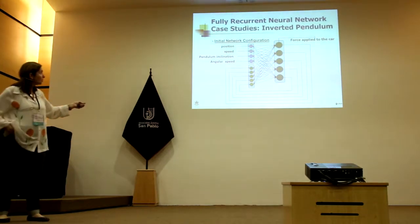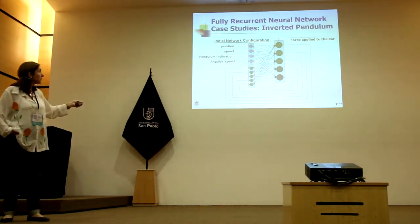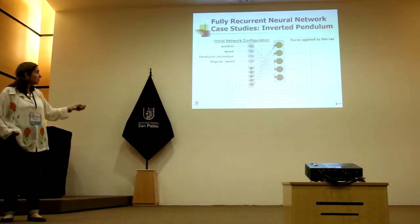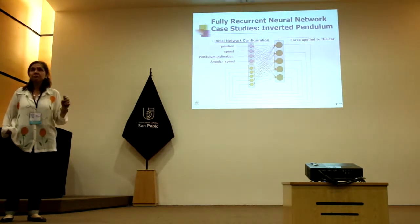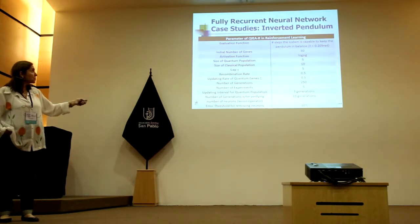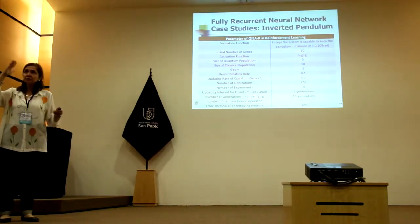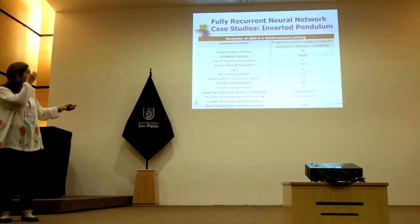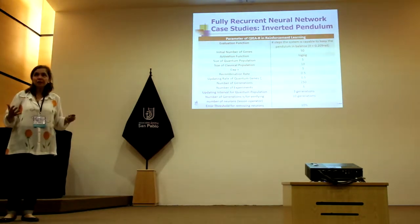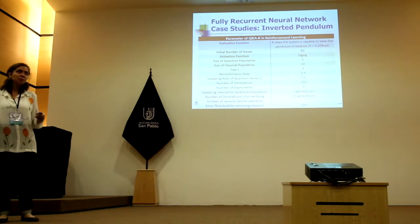Here are the four variables: the position, the speed, the pendulum inclination, and the angular speed, which is also important in this case. The initial number of neurons was just five. The evaluation function uses the number of steps the system is capable of keeping the pendulum in equilibrium. The size of the quantum population was again very small — just five — and for each quantum, two classical chromosomes were observed.